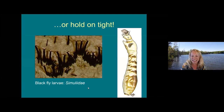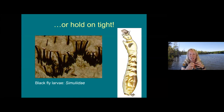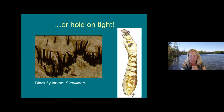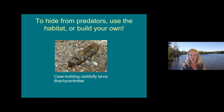Another way to stay put is to hold on really tight. That's what black fly larvae do — the Simuliidae. A bunch of them attached to a rock surface will have tiny, tiny hooks at their tail end, which they use to hold onto the surface, onto filaments of algae, onto the stone itself, or onto dirt particles. Their heads stay up in the water current. When you're out sampling, you may have to do some disturbance of the stream bottom to get those invertebrates to come loose.